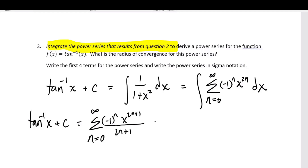The negative 1 to the n is also a constant in the integration with respect to x — it's either 1 or minus 1 in each term, alternating, but constant with respect to x. So you just copy it as you would any other constant. Integrating term by term, you get 2n plus 1 in the denominator, and of course you get a plus C when you integrate.